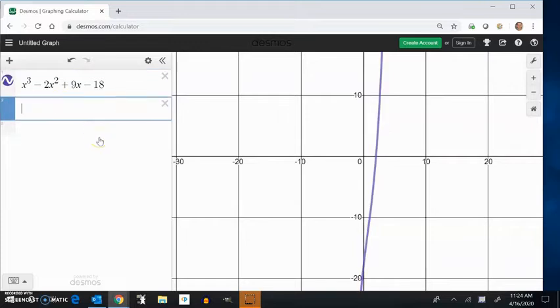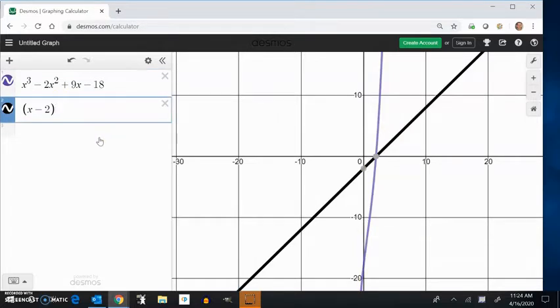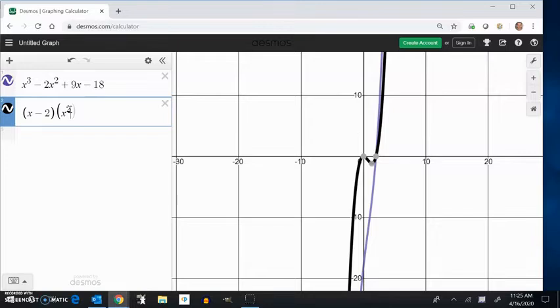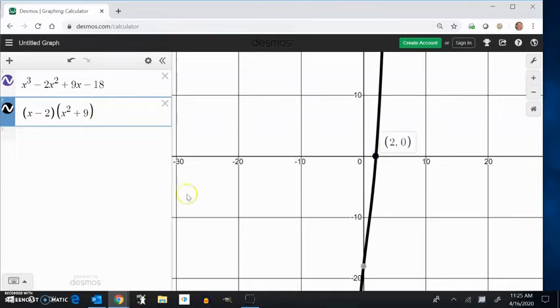Now if I were to factor this, this actually factors into x minus 2 times x squared plus 9. Now we know how to deal with this. We could just solve it out or use quadratic formula or whatever. But what that means is I've got two other zeros here that aren't x-intercepts. They must be complex.